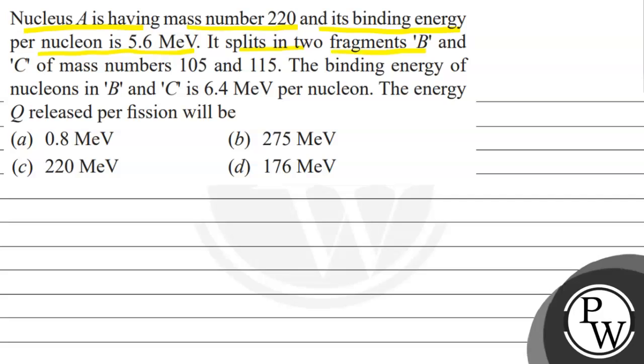It splits into two fragments B and C of mass numbers 105 and 115. The binding energy of nucleons in B and C is 6.4 mega electron volt per nucleon. The energy Q released per fission will be: